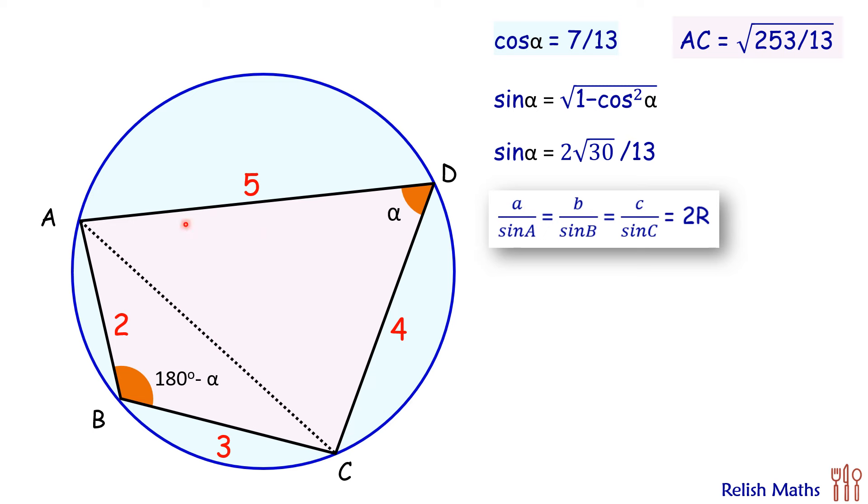So instead of A, we'll take the side AC, and sin A will become sin α. We'll get AC/sin α = 2R, or 2 times the circumradius, which is the radius of the circle we have to find.